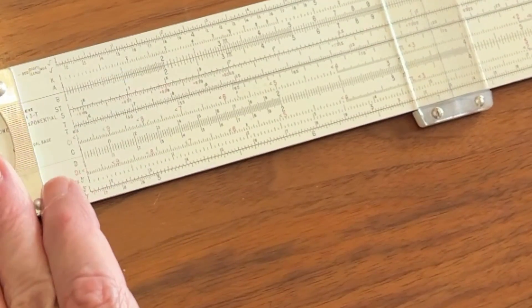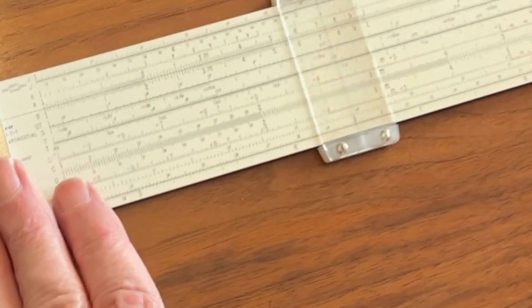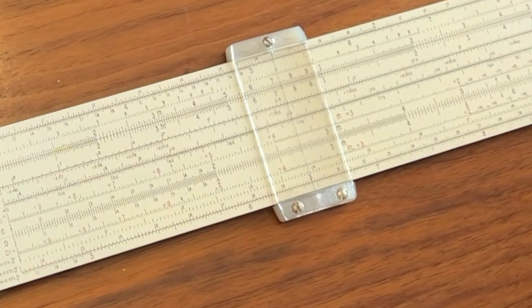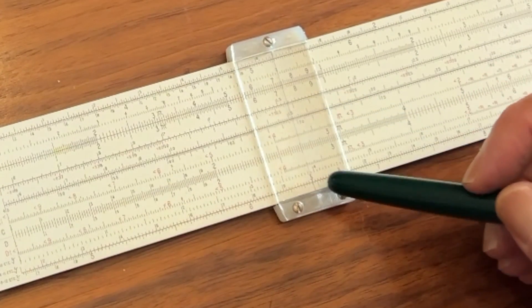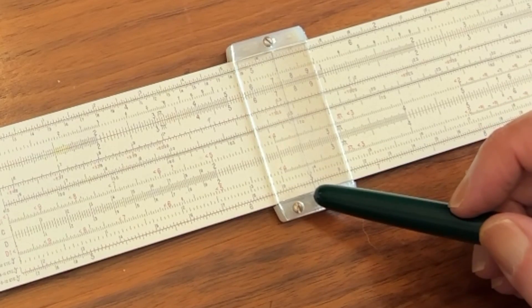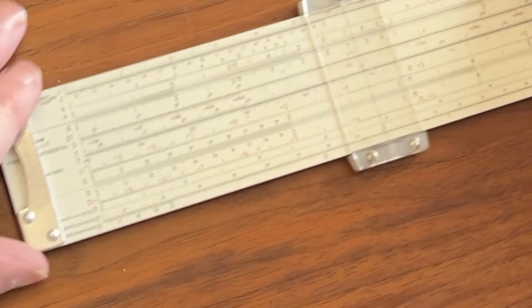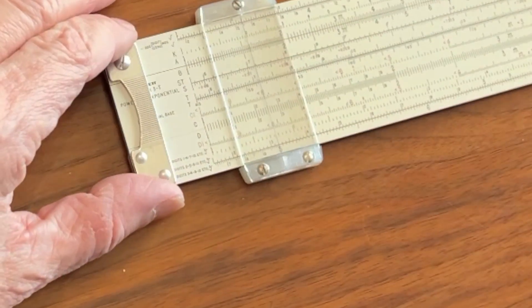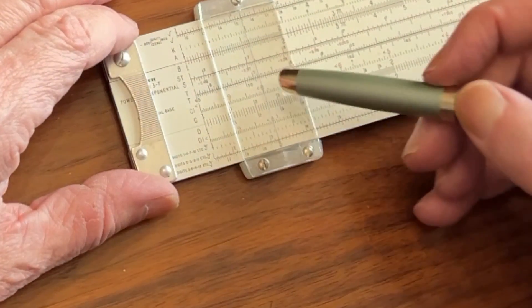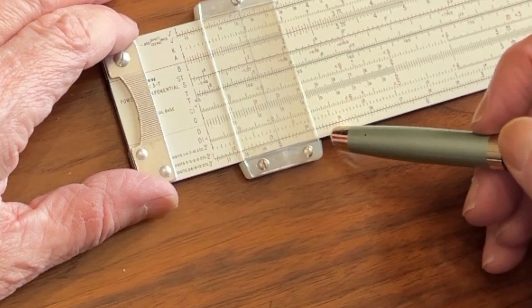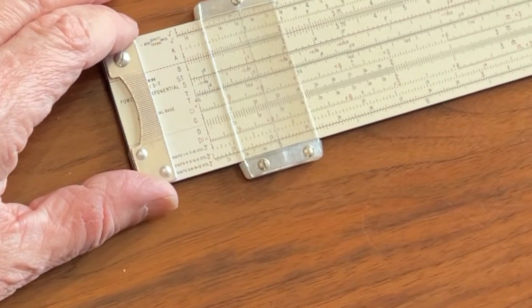So as an example, if we wanted to look at 27, we would go to 27 on the C scale, and we would read right down to the middle and see the cube root of 27, which is 3. Likewise, if we wanted to go to 125, that's between 100 and 1,000, so it would be the bottom cube root scale, and you see the answer is 5.